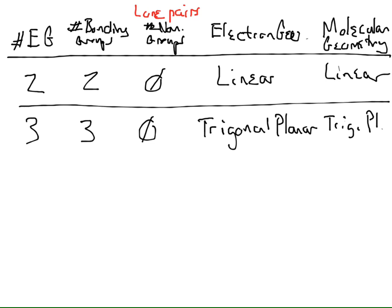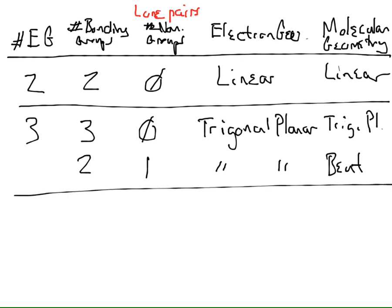What if they aren't all atoms — what if only two are atoms and one is a lone pair? The electron geometry is still trigonal planar. But if one of these is a lone pair, it no longer looks trigonal planar. There is still a lone pair — invisible — but it doesn't look trigonal planar anymore. We call this 'bent.' So the molecular geometry becomes bent.